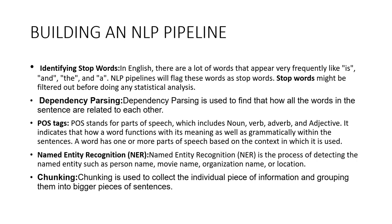The next step is dependency parsing, which is used to define how all the words in a sentence are related to each other. The next step is POS tags — POS stands for parts of speech, which includes noun, verb, adverb, and adjective. It indicates how a word functions in terms of its meaning as well as grammatically within the sentence. A word can have one or more parts of speech based on the context in which it is used.